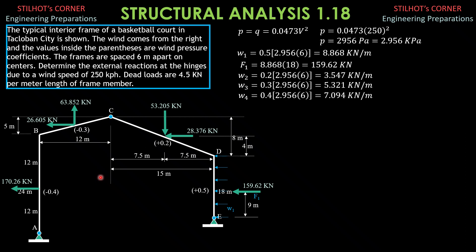For the weight of each member: the vertical member AB is 4.5 kilonewtons per meter times length 24, acting at its center of gravity, equal to 108 kilonewtons. For BC, it is 4.5 times the length of BC — the square root of 12² plus 5² equals 13 meters — so 4.5 times 13 equals 58.5 kilonewtons downward. For CD, 4.5 times the length — square root of 15² plus 8² equals 17 meters — so 4.5 times 17 equals 76.5 kilonewtons. For DE, acting at the center 9 meters from each end, 4.5 times 18 equals 81 kilonewtons.